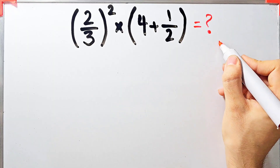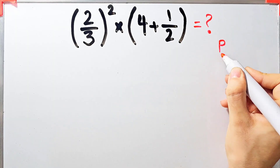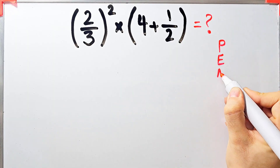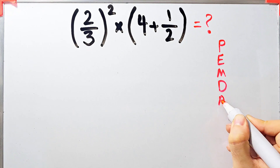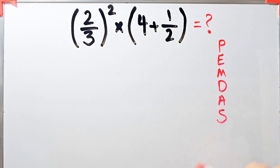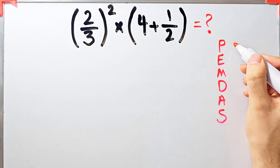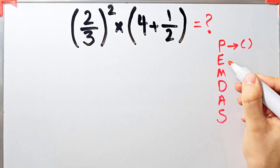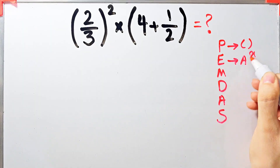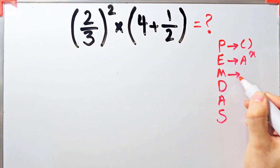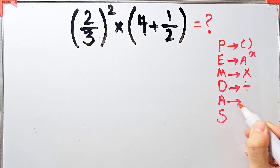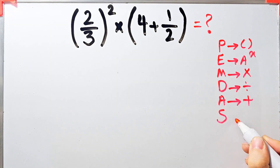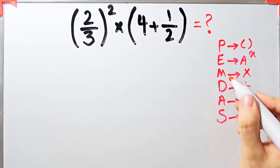To solve this question we need to follow the PEMDAS rule. PEMDAS shows the priority of the mathematical operations — if you don't pay attention to this rule you get the wrong answer. In this rule: P stands for parentheses, E stands for exponent, M stands for multiplication, D stands for division, A stands for addition, and S stands for subtraction.